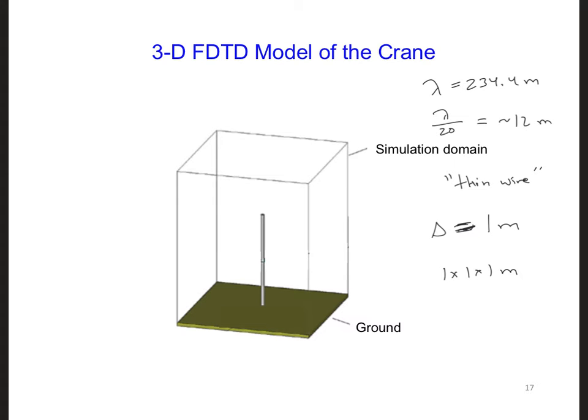Next we want the source to be a plane wave. Let's say that the wave is incident on the crane straight from the left side of the grid. How can we model the plane wave source? We can't put the source along the outside of the grid, right here, because we will need a PML.